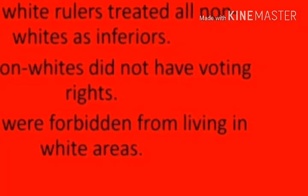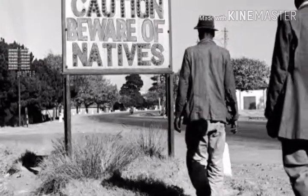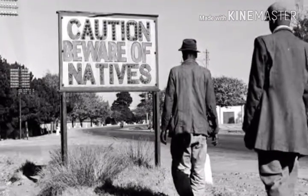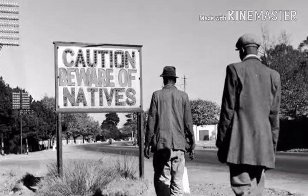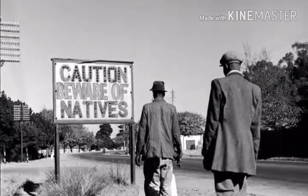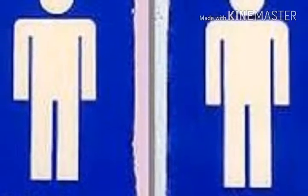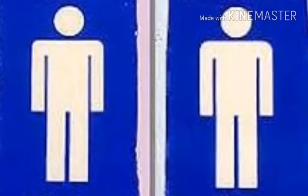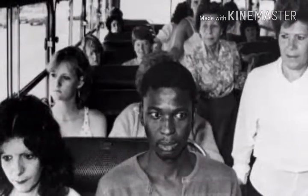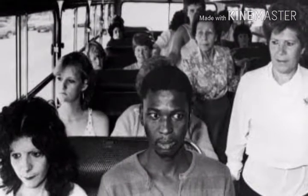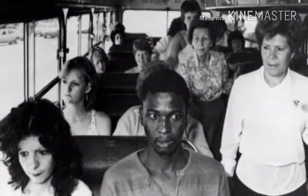The condition of the blacks under the apartheid system in South Africa was critical. They were forbidden from living in white areas; they could work in white areas only if they had a permit. Trains, buses, taxis, hotels, schools, and hospitals were all separate for the whites and the blacks. Thus a policy of segregation was followed. They could not even visit the churches where the whites worshipped. Blacks could not form associations or protest against this terrible treatment.